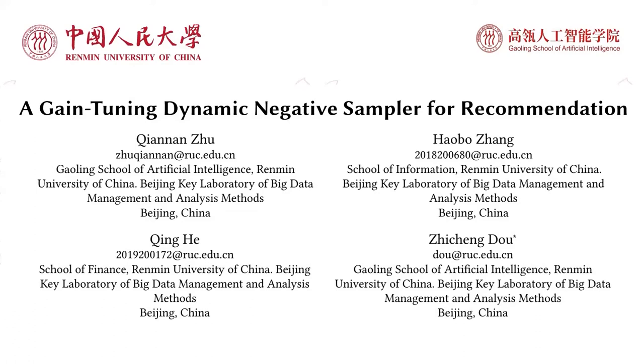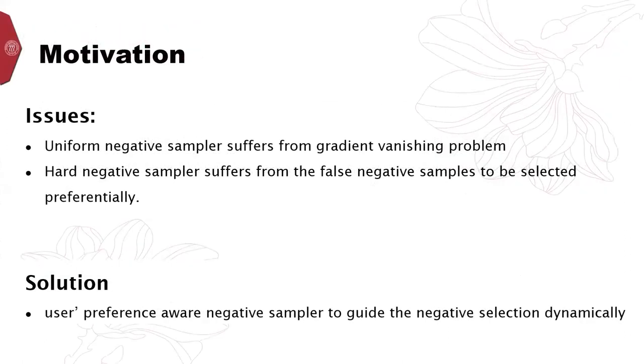Here I will give the report of the paper titled, GDNS: Tuning Dynamic Negative Sampler for Recommendation. In the implicit feedback-based recommendation field, selecting reliable negative training instances is a challenging task.